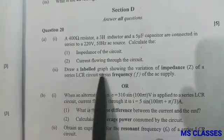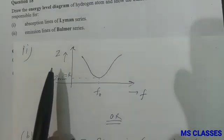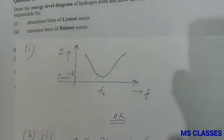And I is V by Z. V is 220 and Z is 503 which is 0.44 ampere. Second part: Draw a labeled graph showing the variation of impedance of a series LCR circuit versus frequency. So this is the graph of Z versus F.